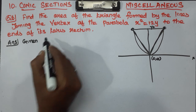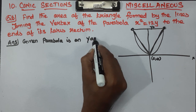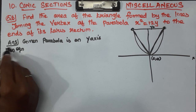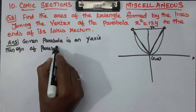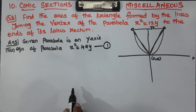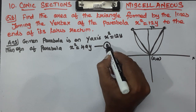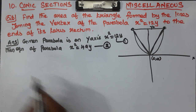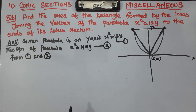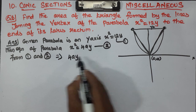What is the given parabola? The given parabola is x² = 12y. The standard equation of a parabola is x² = 4ay. Comparing these two equations, we write: 4ay = 12y.